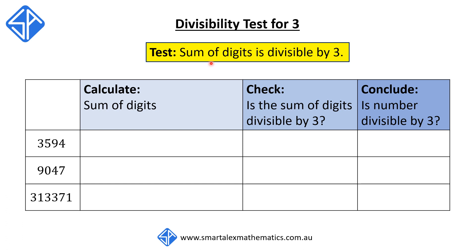In this video, we're going to look at how to apply the divisibility test for 3. In order to show that a number can be divided by 3, we need to show that the sum of the digits is divisible by 3.